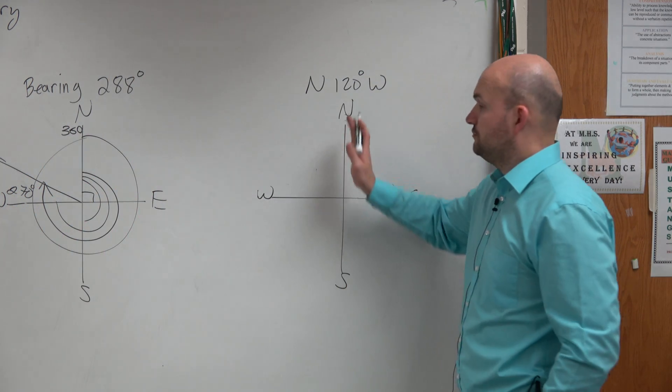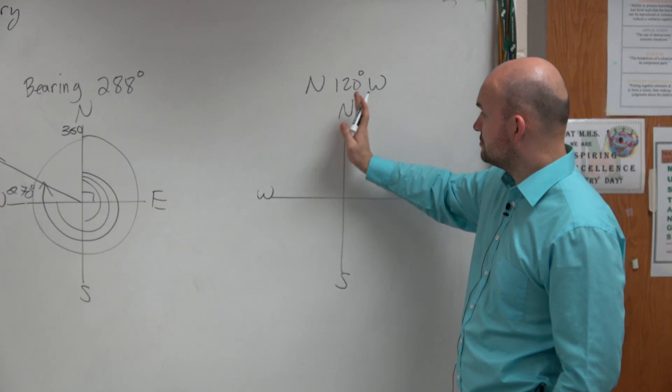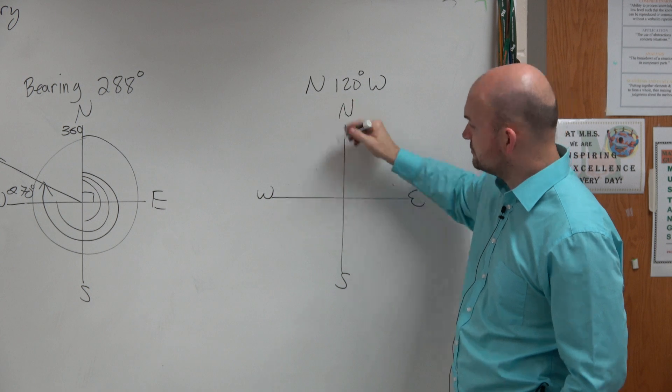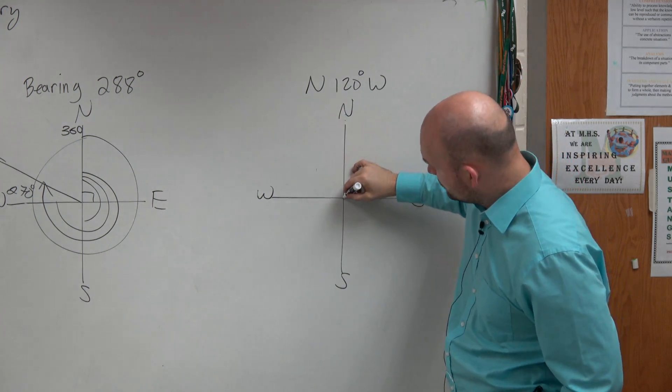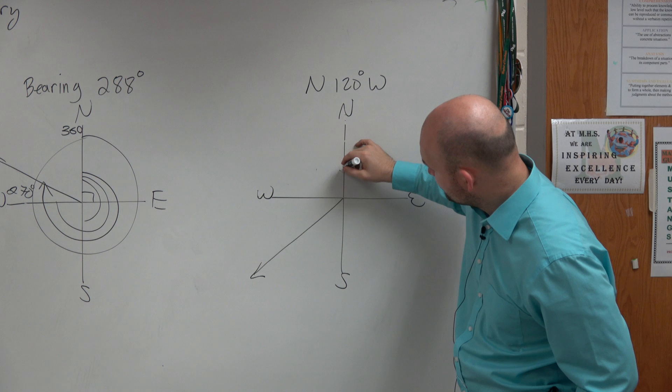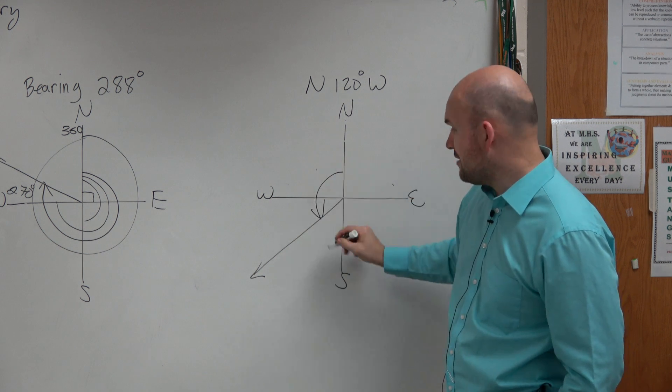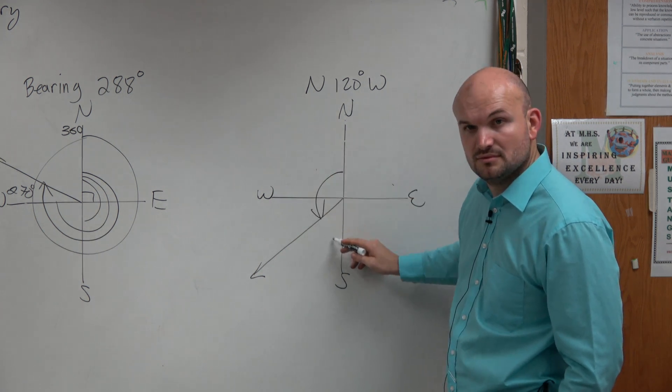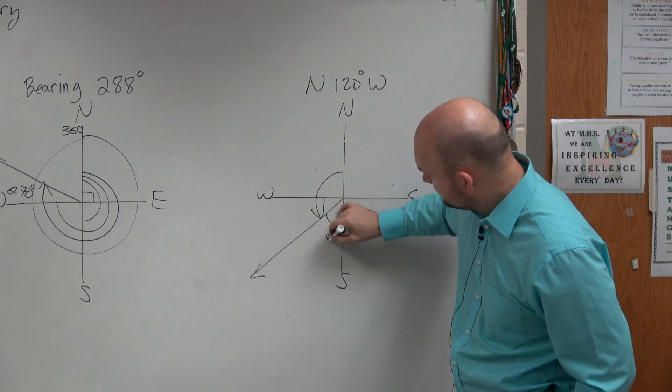Well, if we took this 120 degrees west, so we have due north, 120 degrees west. Here's 90, 120 degrees west is roughly going to be from here to here. Wouldn't you guys agree? How far is this away from here? 60 degrees.